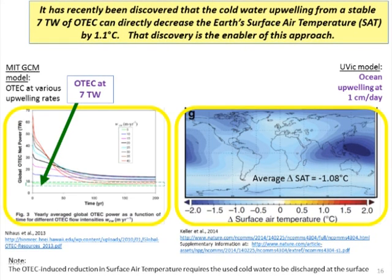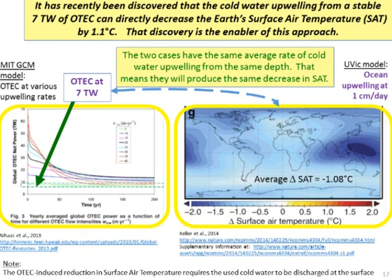When I saw that I said hmm - a little light bulb went on. Niehaus says we can deploy OTEC at seven terawatts stably; Keller et al. says one centimeter per day upwelling decreases air temperature by 1.08°C. I wondered how the two quantities of cold water compare. When I worked it out, the two quantities of cold water upwelling are almost exactly the same number. So that's why I say: cold water upwelling from seven terawatts of OTEC can decrease surface air temperature by 1.1°C.